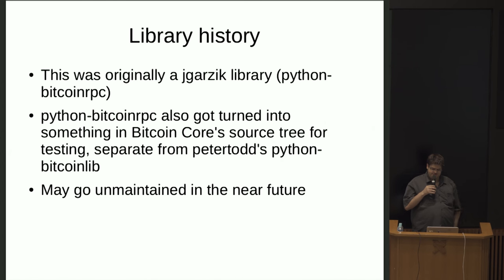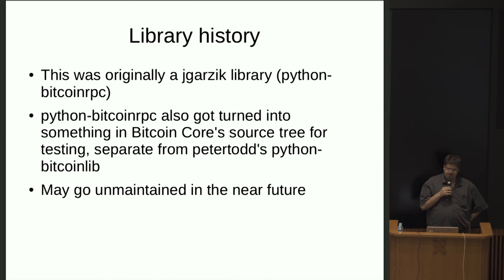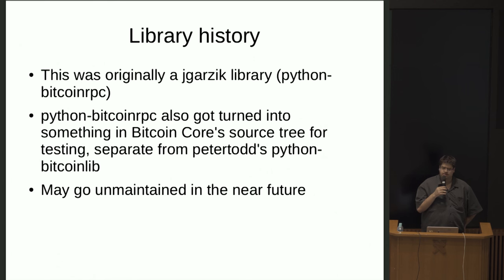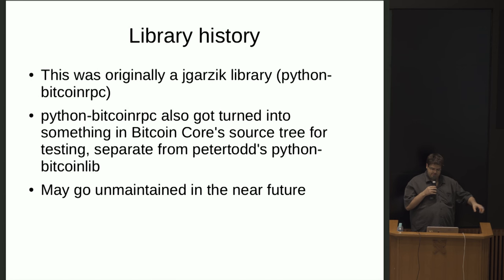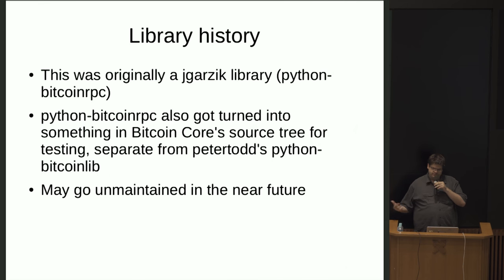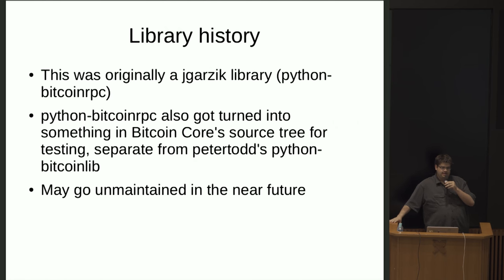Originally this was started by Jeff Garzik as Python Bitcoin RPC, and then it evolved over the years, passing from maintainer to maintainer, or fork to fork. There are also a few other forks flying around called Python Bitcoin RPC — one made it into the Bitcoin Core repository for testing. Python Bitcoin Lib itself is currently hosted under Peter Todd's repository, and he is ostensibly the maintainer, although he warns that it will go unmaintained very soon, or already has.